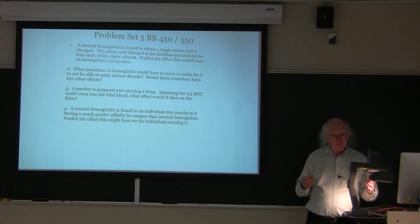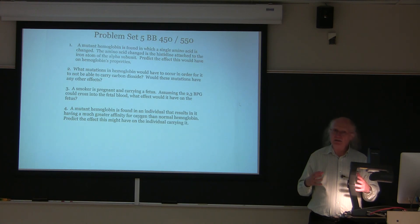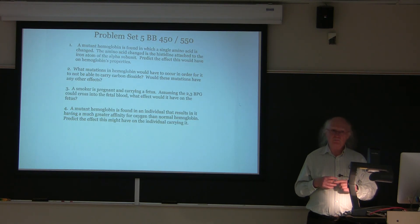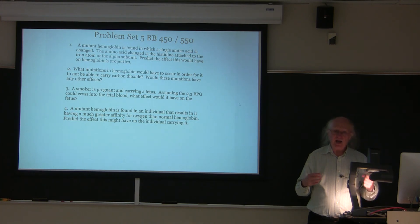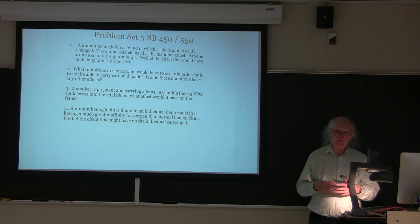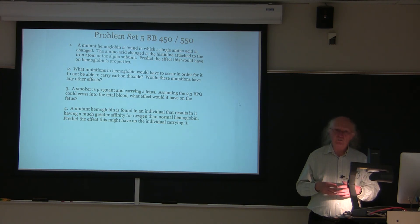Remember that myoglobin has a much greater affinity for oxygen than hemoglobin does. Myoglobin is very good at storing oxygen because of its high affinity, but not so good at delivering oxygen because it doesn't want to let go of it until oxygen concentration is very low. Hemoglobin is well balanced to grab oxygen where it's abundant in the lungs and release it where it's needed in rapidly metabolizing tissues. If the affinity of hemoglobin is significantly changed, not enough oxygen would be released, so an athlete with higher affinity hemoglobin would likely have a reduced athletic capacity.